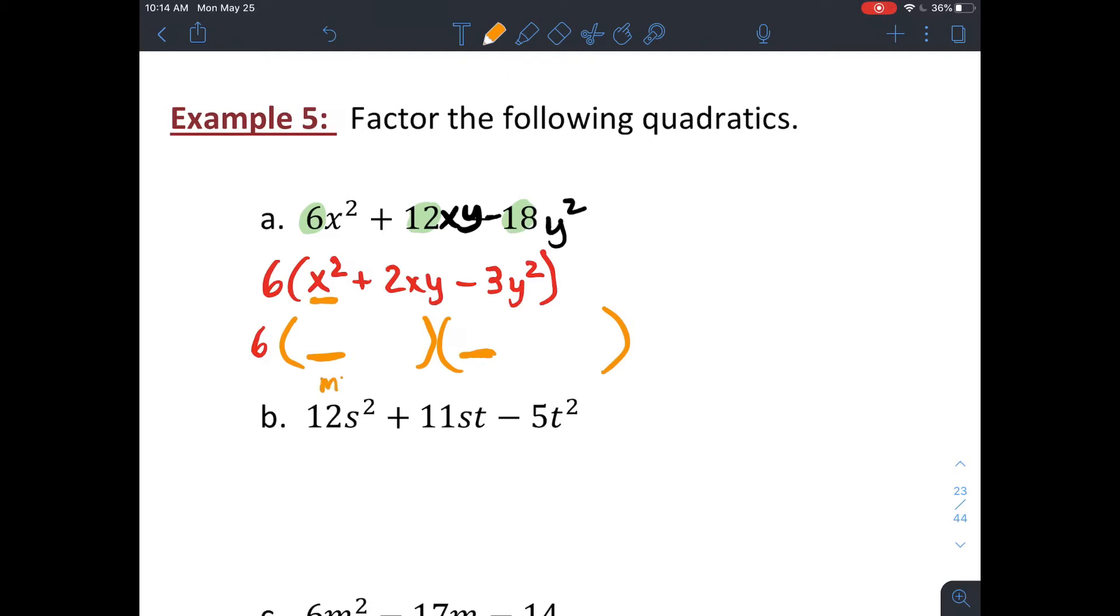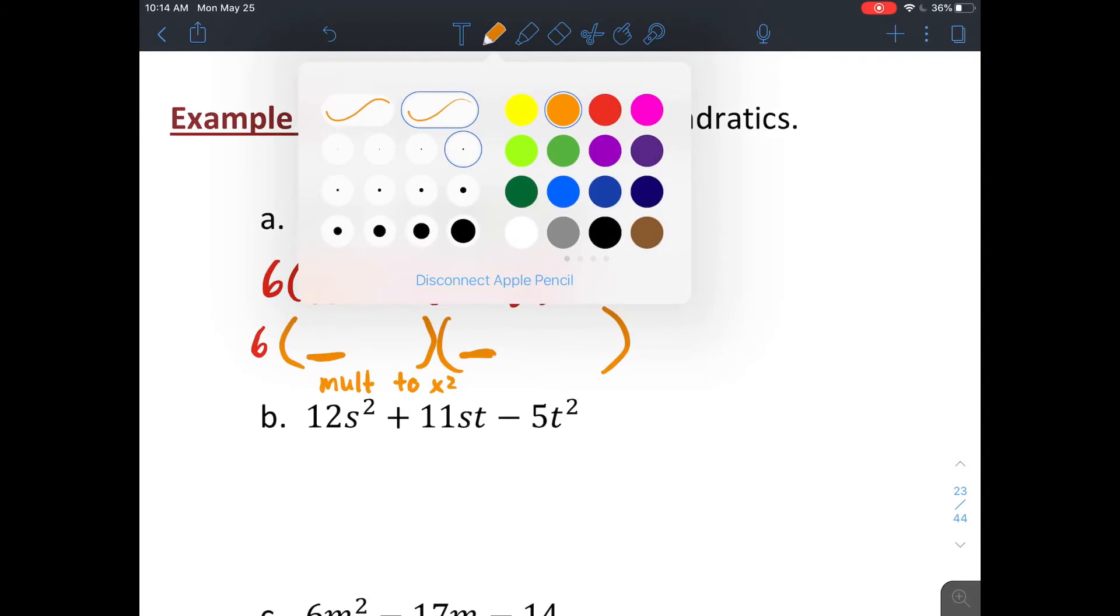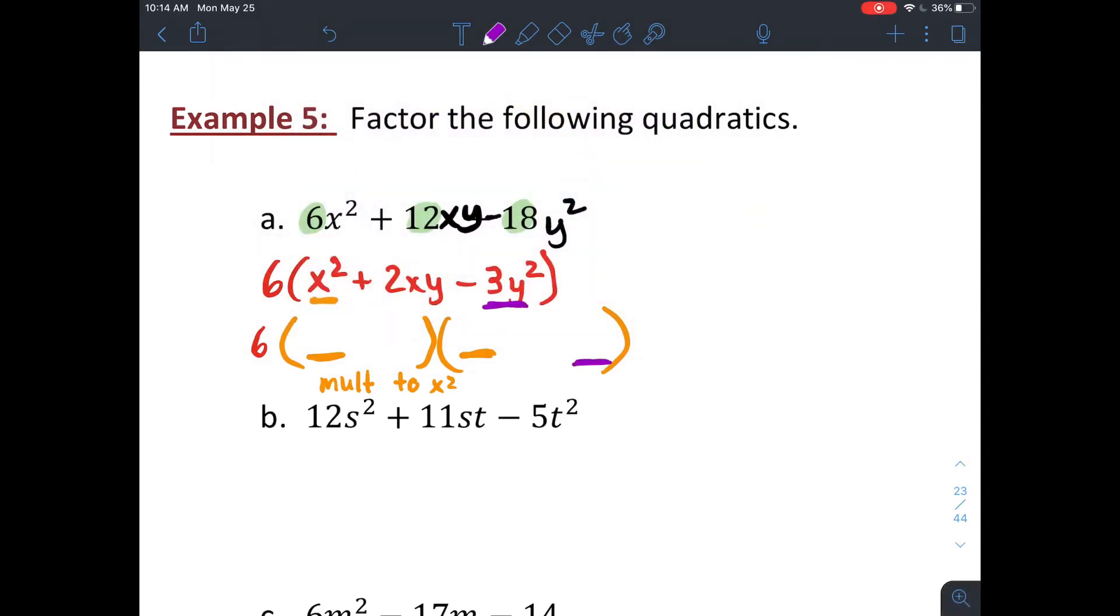So if you think about multiplying two binomials back together to get that, your first two terms are gonna have to multiply to x squared. And your last two terms are gonna have to multiply to negative 3y squared, because that's how multiplying binomials works. So I can do a little bit of guessing. The only things that multiply to x squared are x and x. So that's gotta be x and x. To multiply to negative 3y squared, I could do negative 3y and positive y, maybe.